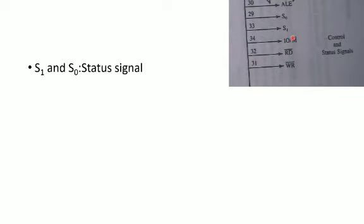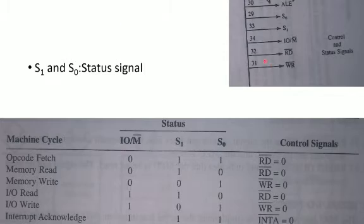Using the S0 and S1 status pins, we can determine the memory operation: memory read, memory data write, I/O device data read or write. The three pins' values are used in a status table. The first entry is opcode fetch — opcode fetch is when the microprocessor fetches the instruction's corresponding opcode from memory.